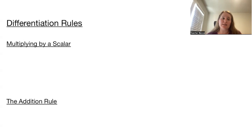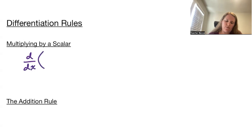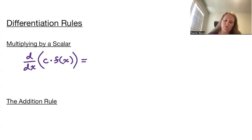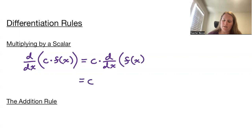The first rule is multiplying by a scalar. If we wish to take the derivative of a scalar c times the function f of x, this is equivalent to the scalar c times the derivative of f of x — or in other words, c times f prime of x.